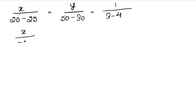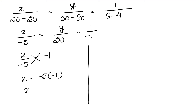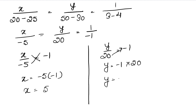So we get x upon minus 5 equals to 1 upon minus 1. Cross multiplying, x equals minus 5 into minus 1, so x equals positive 5. Similarly, y upon 20 equals 1 upon minus 1. Cross multiplying, y equals minus 1 into 20, so y equals minus 20. Therefore the answer is x = 5 and y = −20.